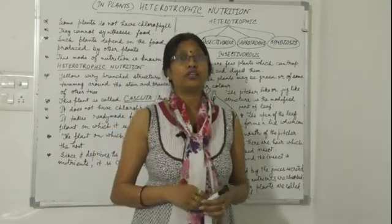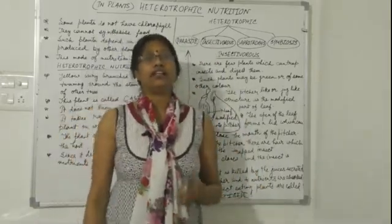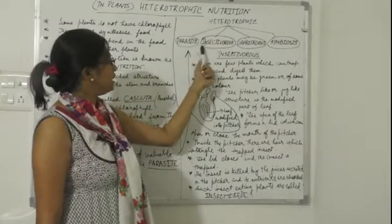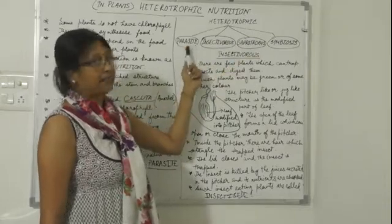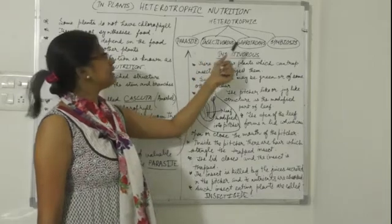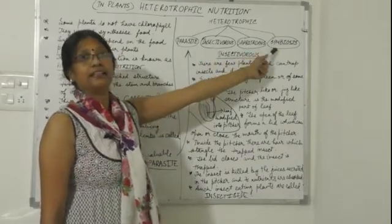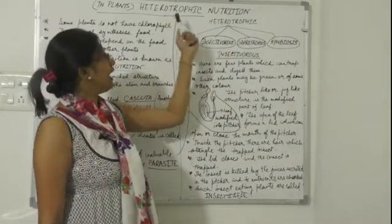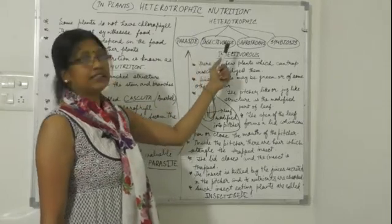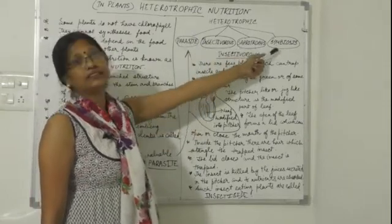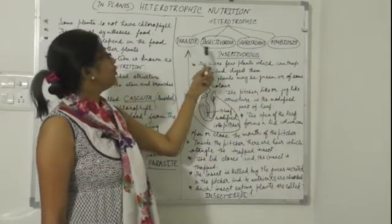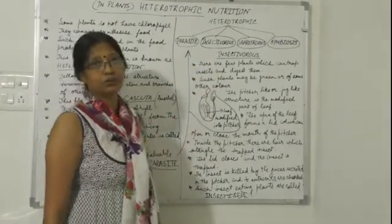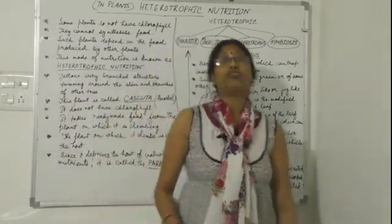In your 7th class book, heterotrophic nutrition is covered in four parts: parasite, insectivorous, saprotrophs, and symbiosis. There are four types of heterotrophic nutrition in plants. Today we will discuss the first two types — parasitic mode of nutrition and insectivorous mode of nutrition.